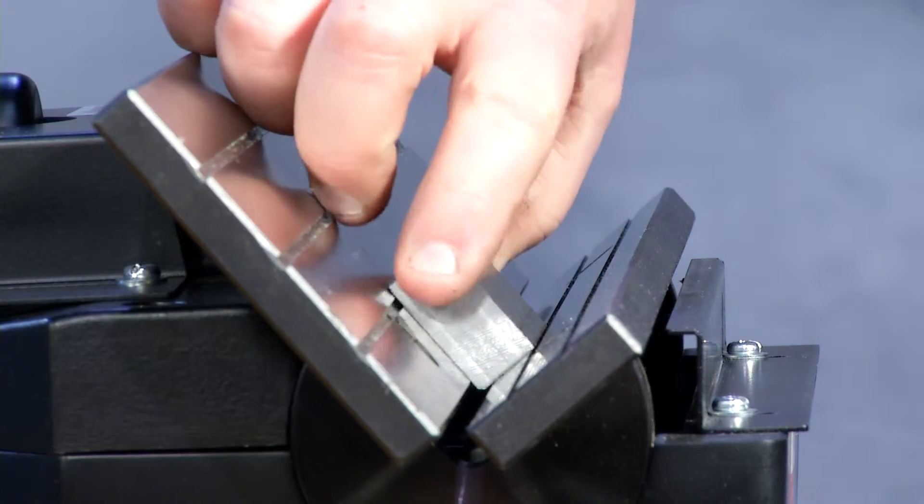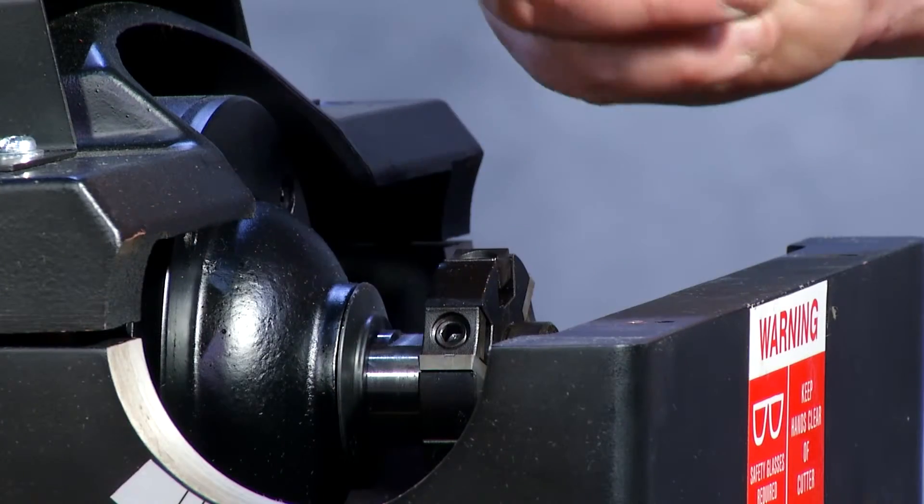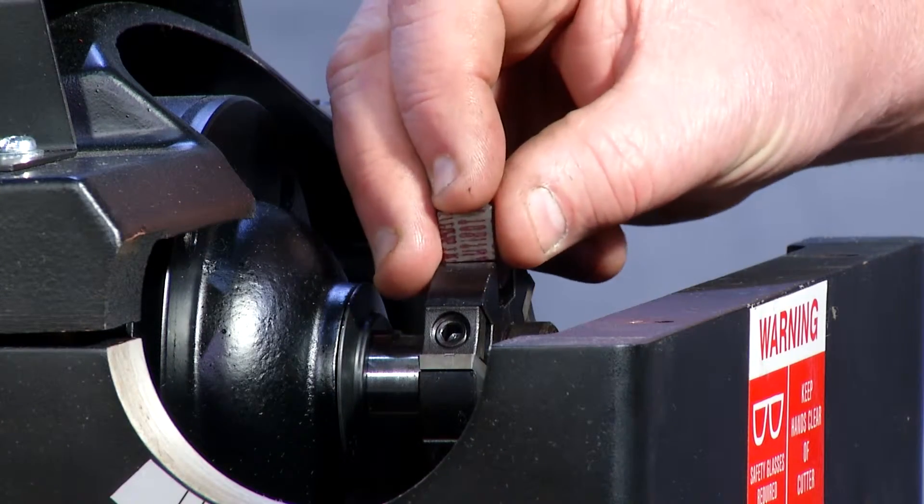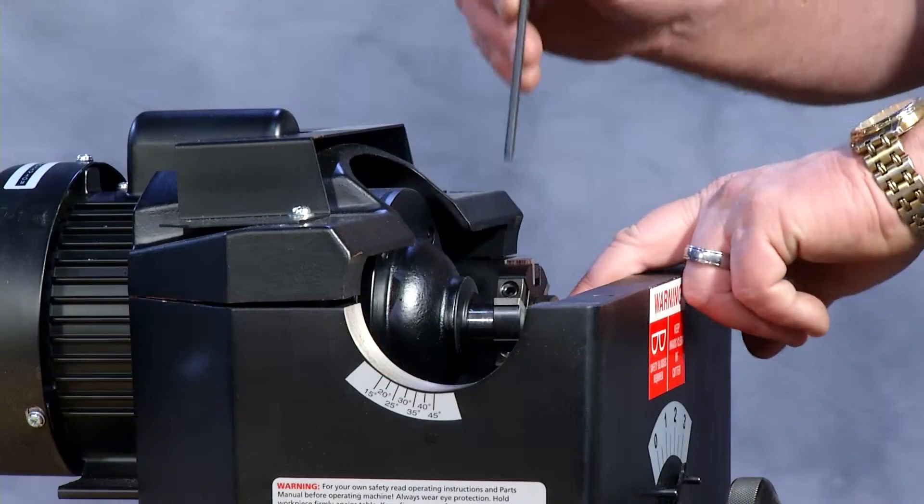As you can see the edge looks as if you had just taken it off the mill. Each insert is indexable four times and can be moved side to side in the cutter head in order to utilize the full half inch.